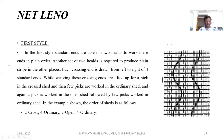In the first style, standard ends are taken in two heels to work these ends in the plain order. The standard ends are taken into two heel frames and worked in the plain order. A set of two heels is required to produce the plain weave in other places. Each crossing end is drawn from left to right of four standard ends, and the crossing end crosses the four standard ends along with the plain weave, forming the leno structure.